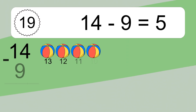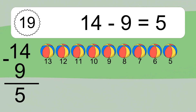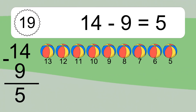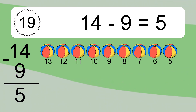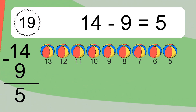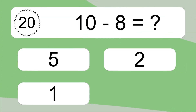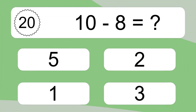14 minus 9 equals what? 14 minus 9 equals 5. Let's count it: 13, 12, 11, 10, 9, 8, 7, 6, 5.